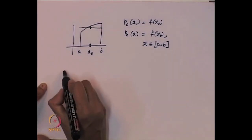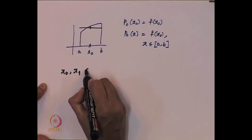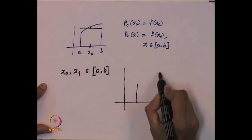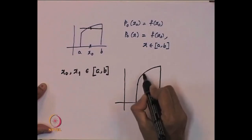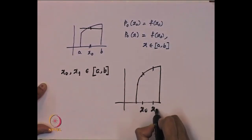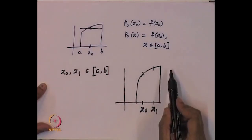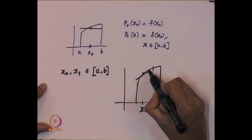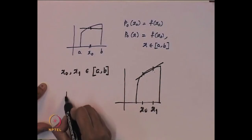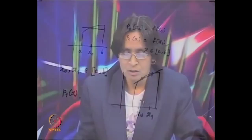Now let us look at the case when n is equal to 1. That means you have got two points x_0 and x_1 in the interval [a, b]. Here is our function, and we are looking at x_0 and x_1. What we want is a linear polynomial — that is, a polynomial of degree less than or equal to 1. It is immediate that you just look at the values there and join by a straight line. That is going to be p_1(x). Now let us look at the general case: we will have n+1 distinct points and fit a polynomial of degree less than or equal to n which agrees with our function f at those n+1 points.